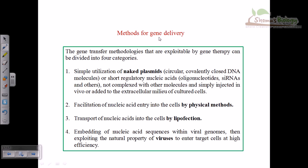There are four different vehicles for gene transfer. First is naked plasmid — a circular covalently closed DNA. We can also use short regulatory nucleotides like oligonucleotides and siRNA. Second are physical methods like the gene gun, where gold particles are coated with the desired gene.